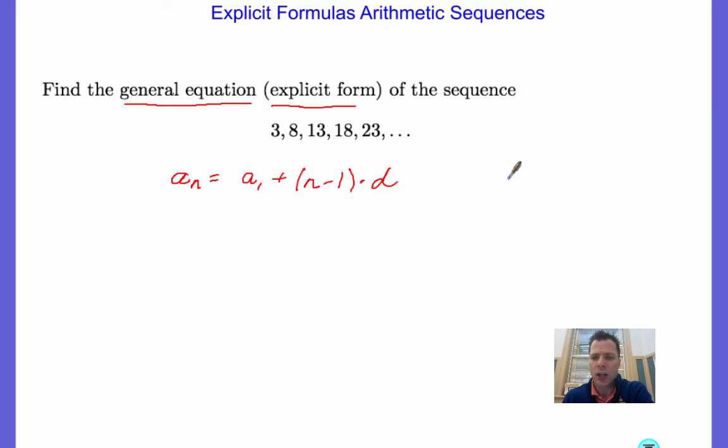So, the first thing we need to find is the common difference. The difference between terms, 8 minus 3 is 5, 13 minus 8 is 5, 18 minus 13 is 5, 23 minus 18 is 5. So, it's all increasing by 5, so we know that d is equal to 5.